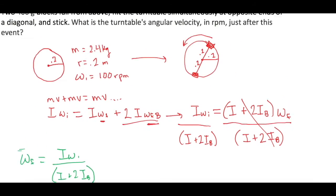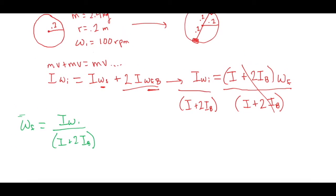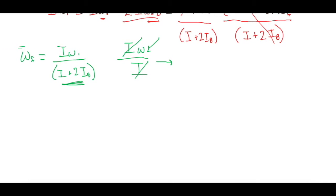Now, about that 100 RPM — we should convert to radians per second, right? But think about it: we have an I times an omega on top, and another I on the bottom. Those I values cancel, leaving just the units of omega. So whatever units we put in, the equation spits out the same units. Since we want RPM at the end, I'll leave it as RPM — it saves a little time. Just be careful to only do this when the units cancel like this.